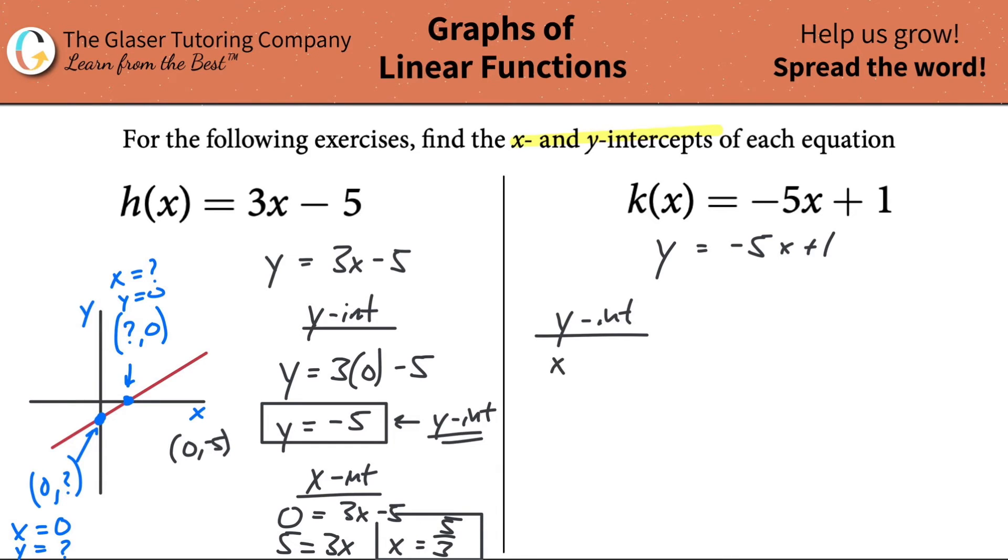So now y equals negative five times zero plus one, y is equal to then one. Look at how easy that is. Boom, done.